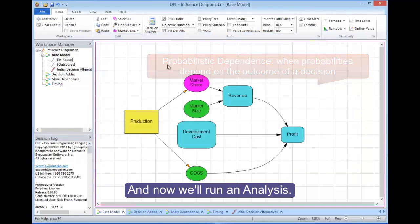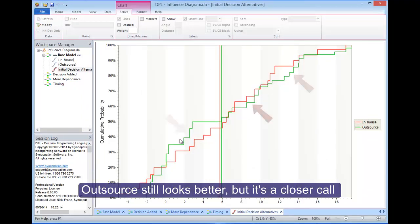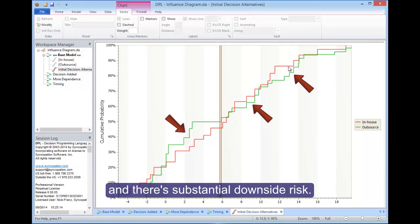And now we'll run an analysis. Outsource still looks better, but it's a closer call, and there's substantial downside risk.